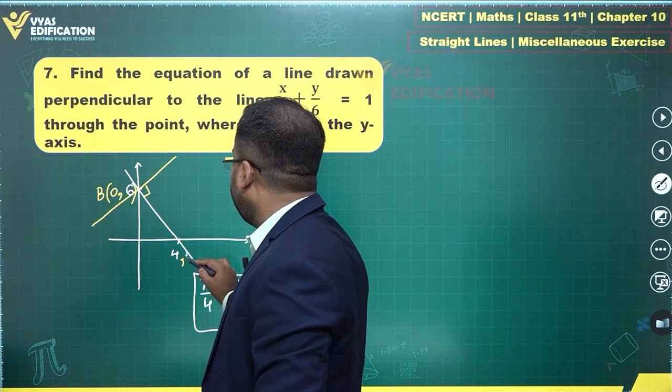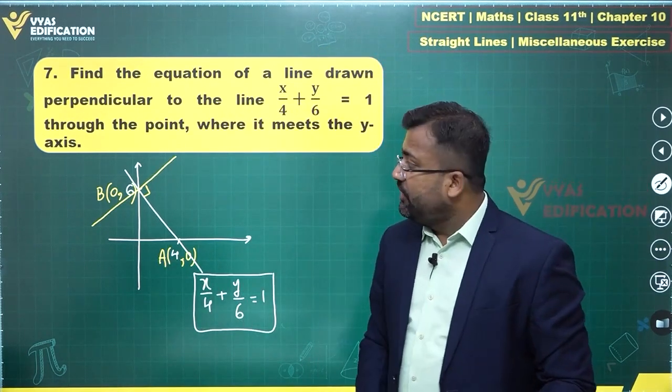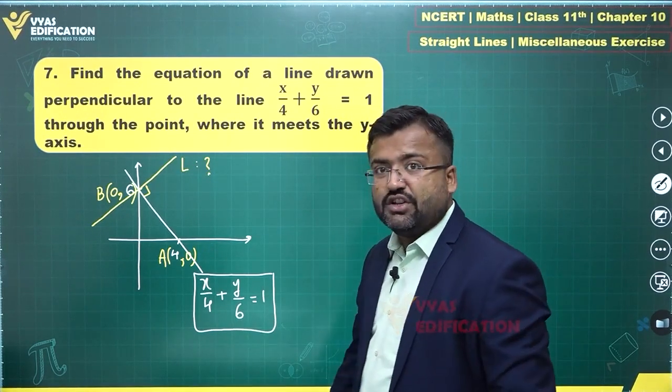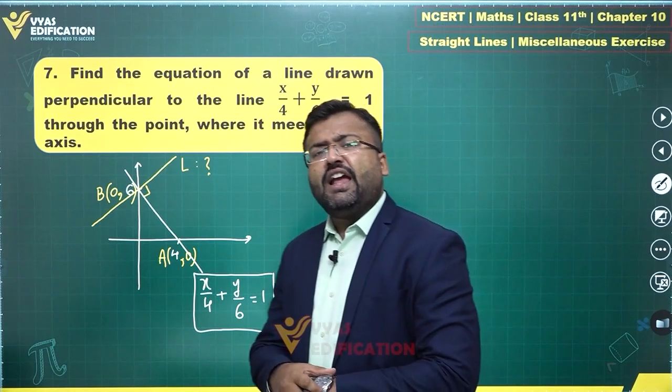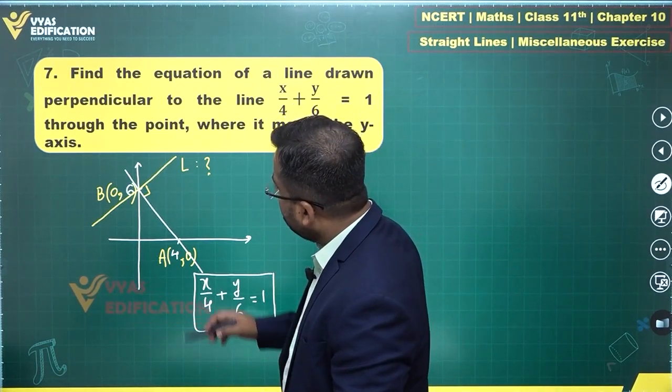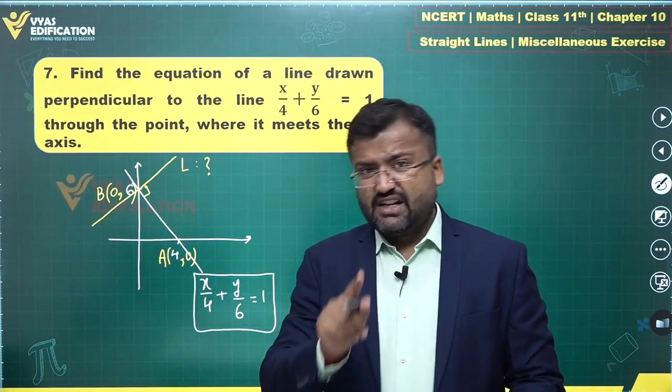Let's call this B. This particular point is (4, 0), let's call this A. We are looking for this particular line L, finding the equation of this particular line L. So for L, what do we know? We know that L is passing through this particular point (0, 6), that's one condition.